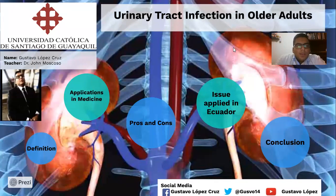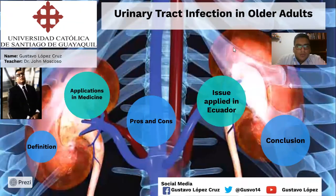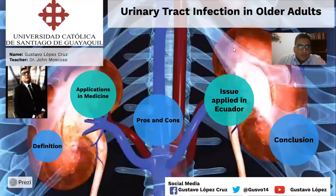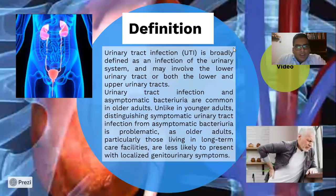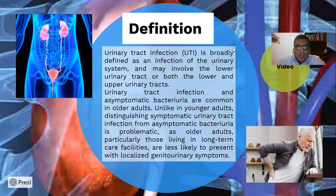Hi, my topic is urinary tract infection in older adults. My name is Gustavo Lopez. First, definition: urinary tract infection, UTI, is broadly defined as an infection of the urinary system and may involve the lower urinary tract or both the lower and upper urinary tract.